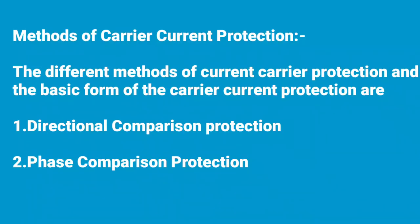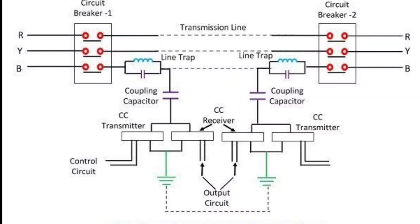In the directional comparison protection scheme, protection is done by comparison of the power flow direction at the two ends of the line. The operation takes place only when the power at both ends of the line flows in the bus-to-line direction. A carrier pilot relay informs the equipment how a directional relay behaves at the other end of the short circuit. The relay at both ends removes the fault from the bus if the fault is in the protected section. For an external fault, the power flow will be in the opposite direction. During the fault, a signal through the carrier pilot is transmitted from one end to another end.